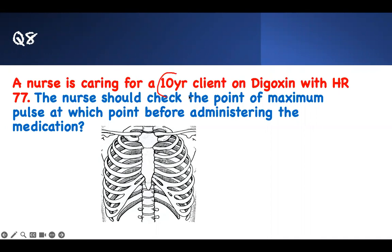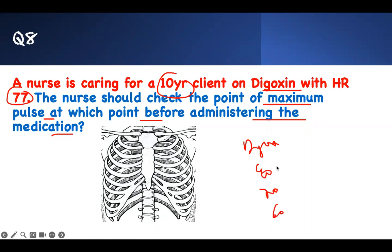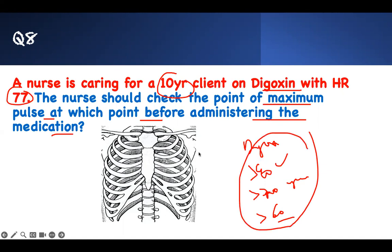Number eight: A nurse is caring for a 10-year-old client on digoxin with a heart rate of 77. The nurse should check the point of maximum impulse before administering the medication. When on digoxin, you need to know the thresholds: neonates and young adults — give if heart rate greater than 70; adults — give if greater than 60. This patient is a young adult with a heart rate of 77, so it is fine to give.